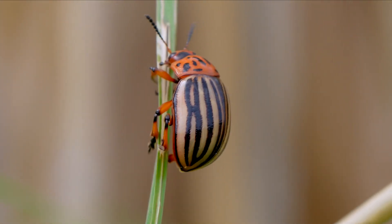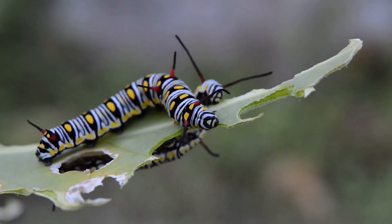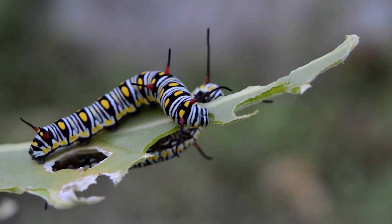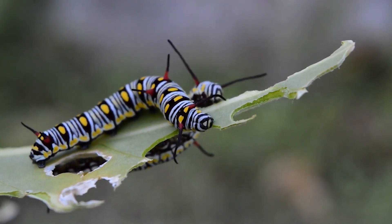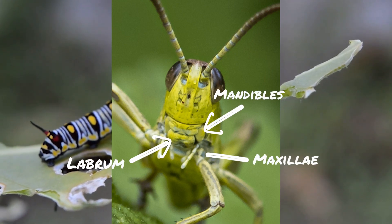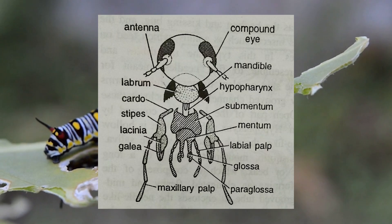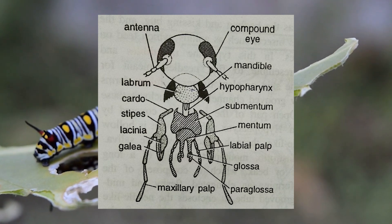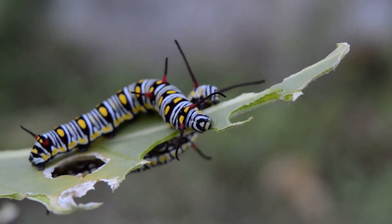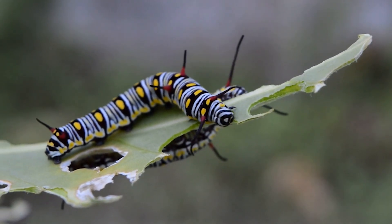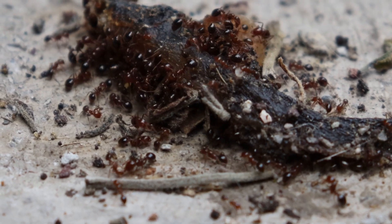The first external feature we will cover is the insect mouth. Insect mouthparts are a unique structure that changes depending on an insect's style of feeding. At the most basal level, an insect's mouth features, from top to bottom, the labrum, the mandibles, the maxillae, and the labium. Another structure, the hypopharynx, is analogous to a tongue and is seen in many insects with chewing-biting mouthparts. The lower mouthparts — the maxillae and the labium — each possess a pair of palps to aid in function.